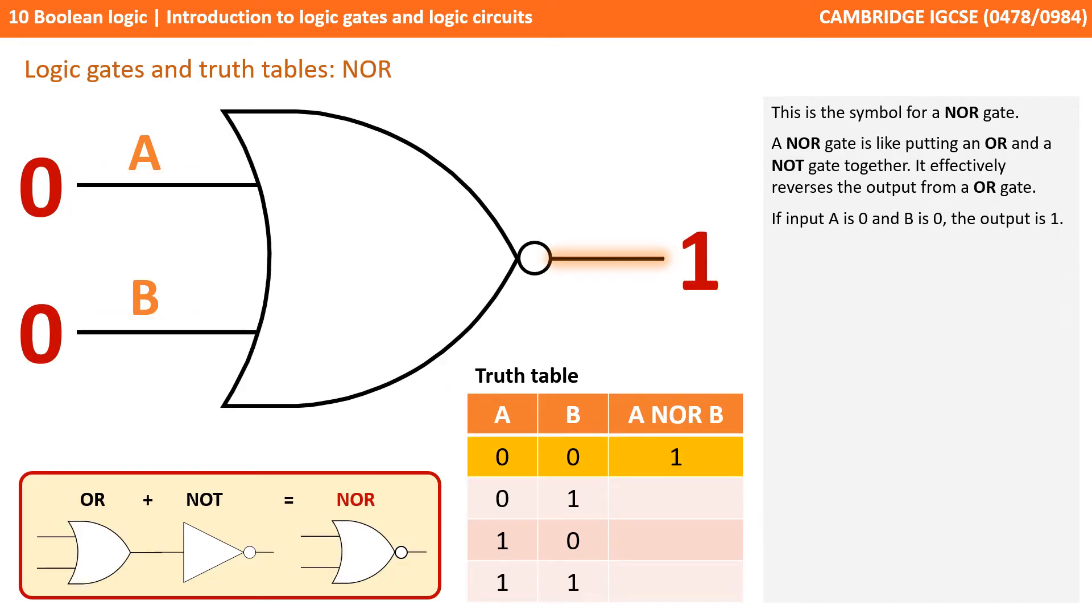Next we have the symbol for a NOR gate. This operates in a similar way to a NAND gate. Apart from this time it's like putting an OR and a NOT gate together. Therefore effectively reversing the output from an OR gate. So if input A is 0 and B is 0, the output is 1.